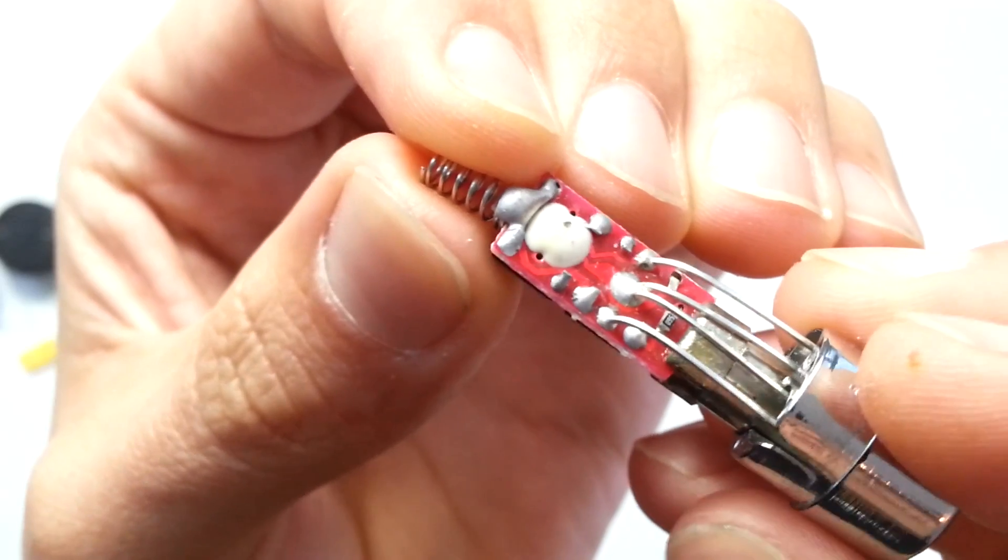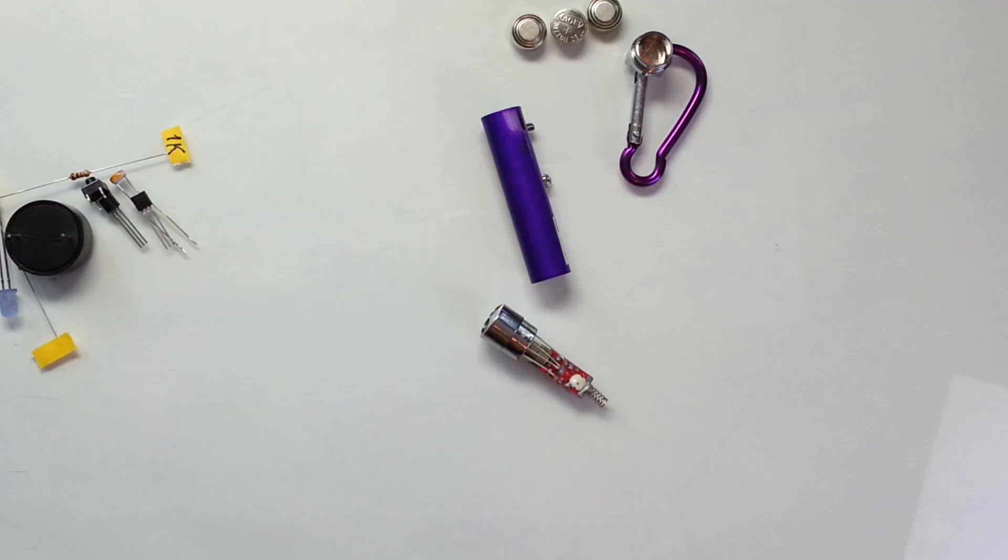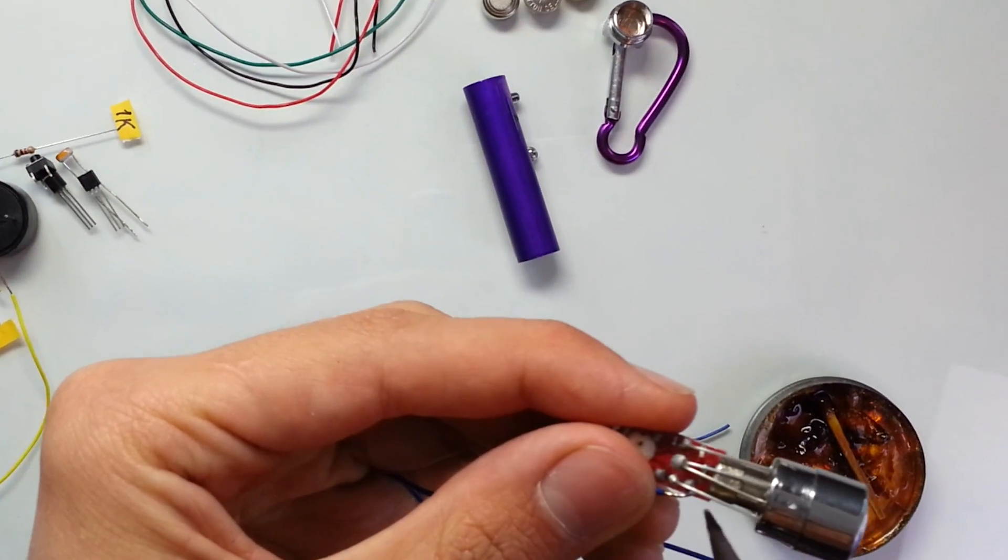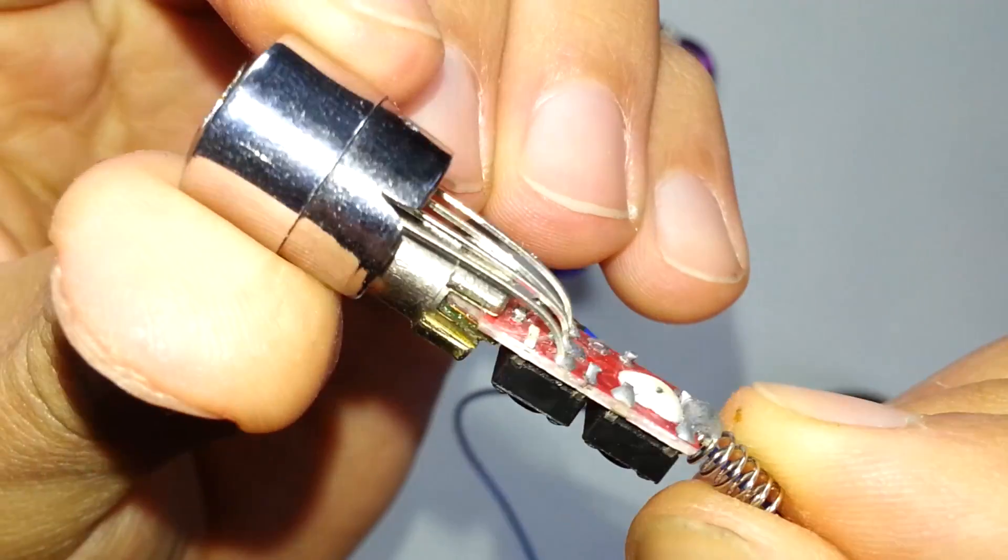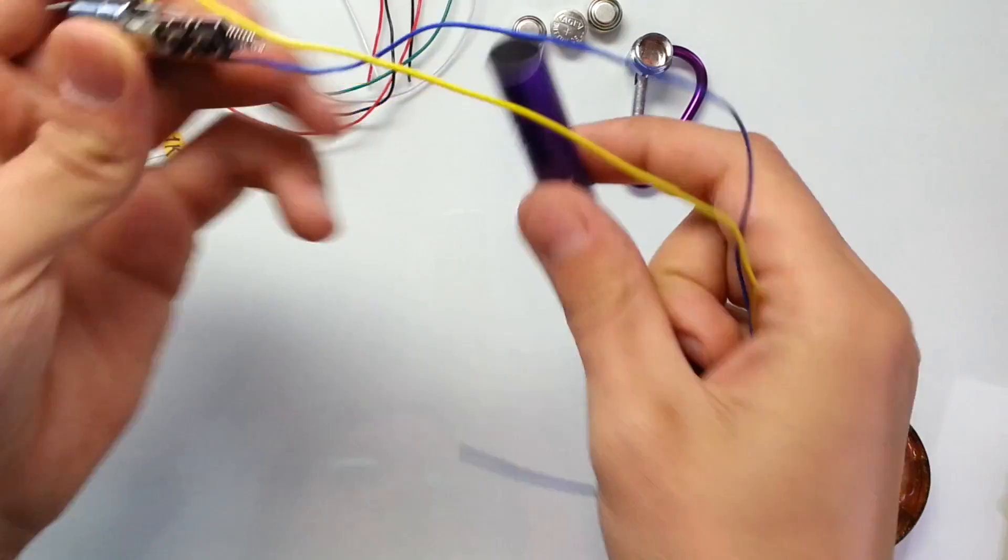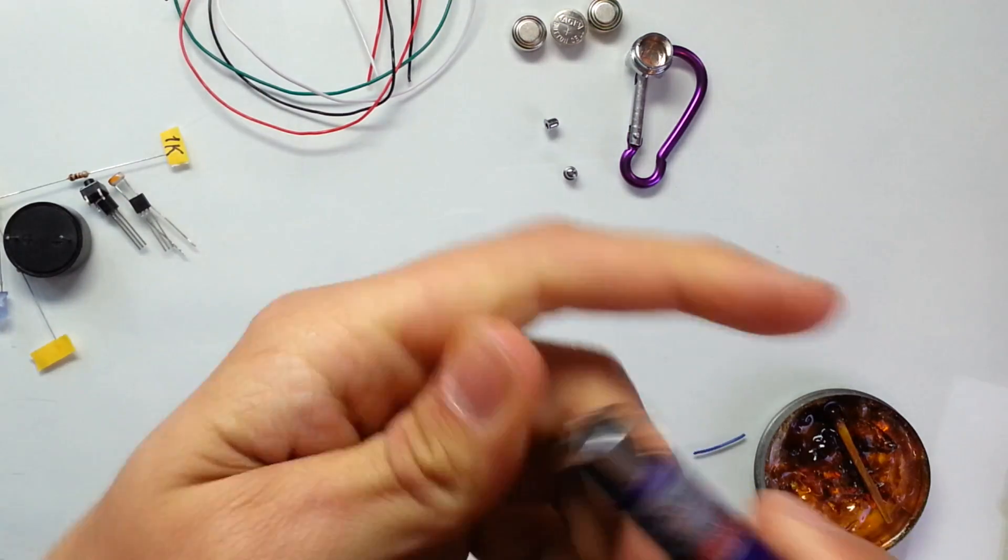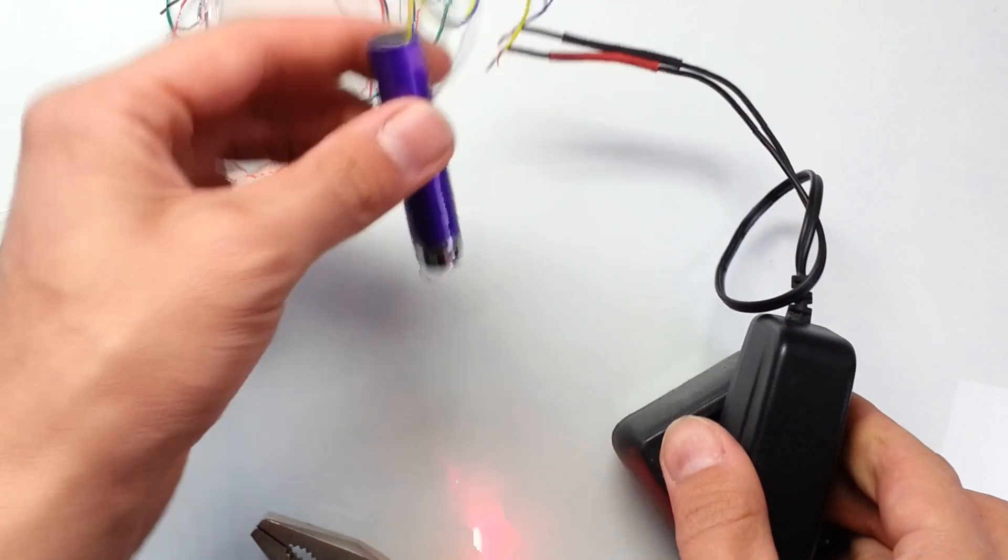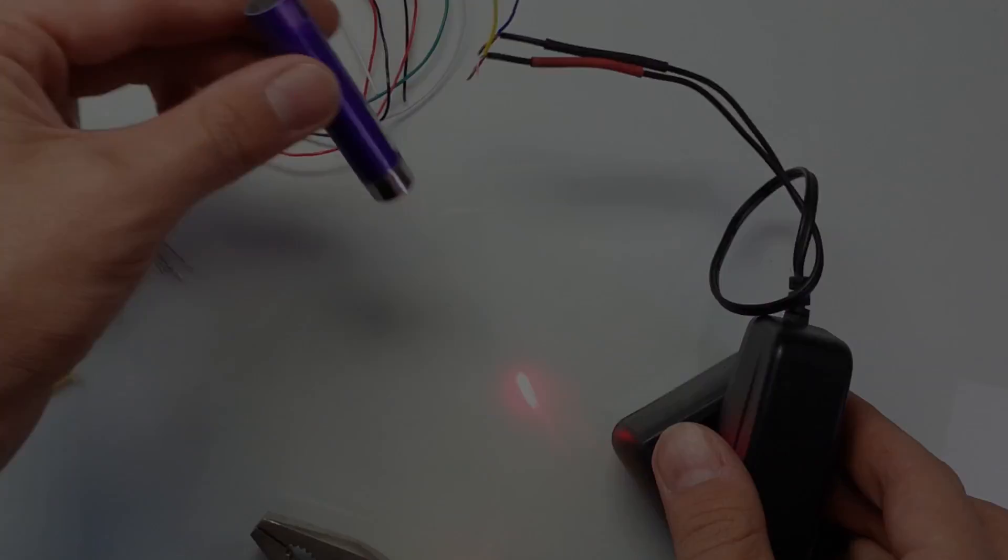First let's disassemble the laser pointer and solder 2 wires that will power the laser. Let's solder the negative wire to the resistor, like this. And the second wire I will connect to the housing of the laser pointer. Now let's check that this laser still works. Let's connect the power supply and do a test. Good sign, the laser survived my soldering, which means that we can continue building our security system.